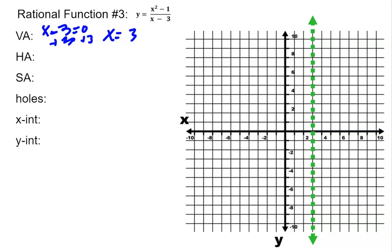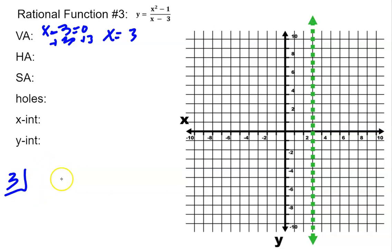I look at my denominator, which is x minus 3, so the vertical asymptote is at 3, and that's what I'm going to divide by. Then I take my numerator, which is x squared, and put in the coefficients for synthetic division.